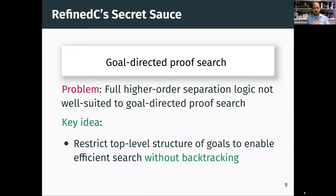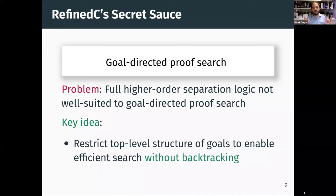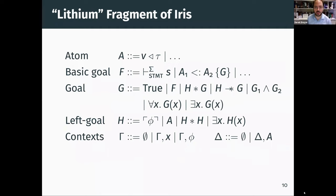As long as the developer of RefinedC provides a sufficient number of typing rules to guide how you should solve goals involving these RefinedC types, then you can insert those typing rules into the apparatus of the goal-directed proof search. To make this more concrete, we've carved out a fragment of Iris which we call Lithium.